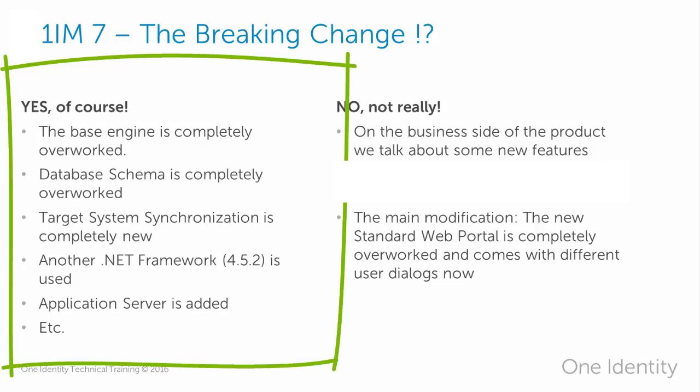On the other hand, there is also the yes answer. Yes, Identity Manager 7 is a breaking change — from the perspective of system administrators or project administrators, meaning PSO staff and partners installing Identity Manager. From the engine perspective, nearly everything has changed. The complete database schema has been overhauled. The engine works differently. The API is overhauled. We are using .NET Framework 4.5.2 instead of version 2. And we have added an application server which allows a three-tiered architecture. The technical changes are just amazing.